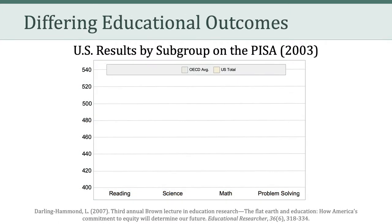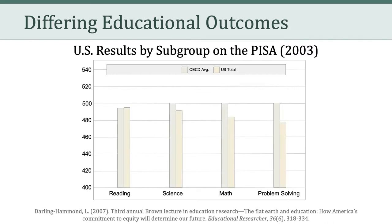Darling Hammond shares with us the U.S. results by subgroup on the 2003 Program for International Student Assessment, also known as the PISA. Let's take a look at how the U.S. does on average compared with the other 35 countries included in the PISA assessment, labeled as the OECD — the Organization for Economic Cooperation and Development — which helps administer and oversee the PISA assessment.